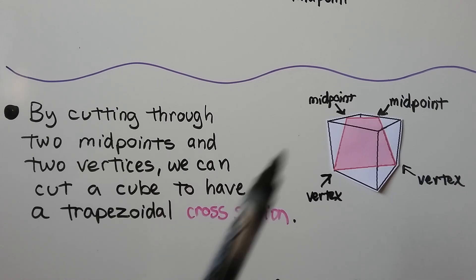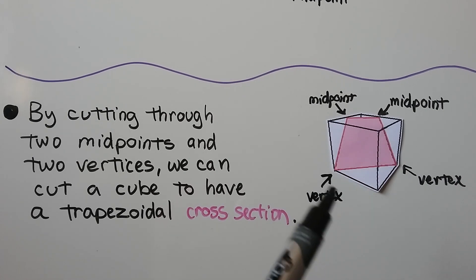By cutting through two midpoints and two vertices, we could cut a cube to have a trapezoidal cross section.